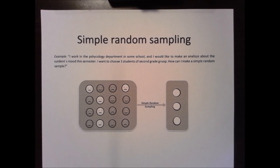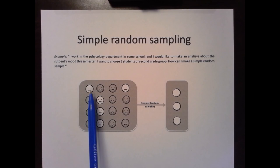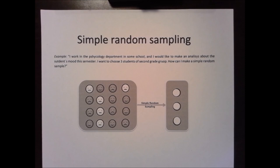The students have different moods — we can see happy people, sad people, and people who are maybe not so happy or not so sad. We need to choose three of those students by simple random sampling.